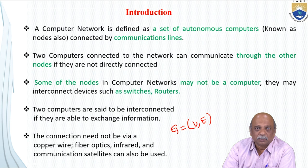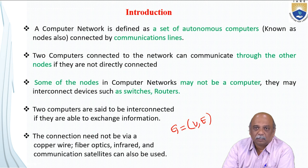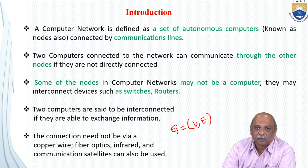The resources may be hardware or software resources, and information can also be considered an important resource. The connection need not be via copper wire — fiber optics, infrared, and communication satellites can also be used. Nodes are interconnected with wired links and wireless links. Wired links include copper wire, fiber optic, and coaxial cable, while in wireless communication, the atmosphere acts as the channel for information transmission.